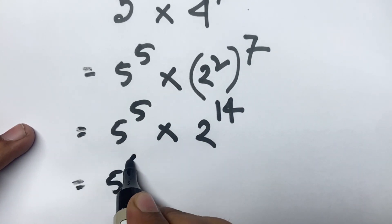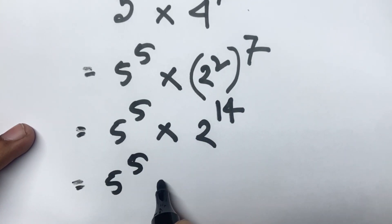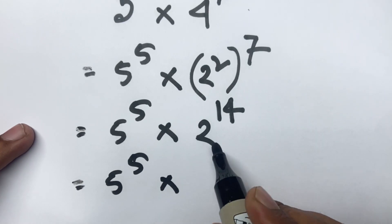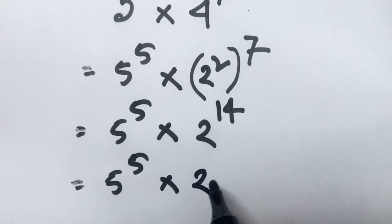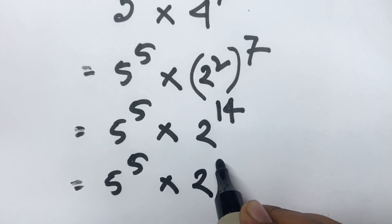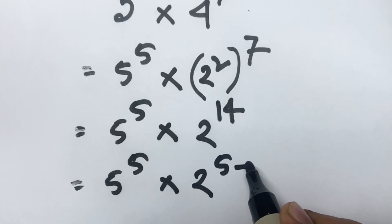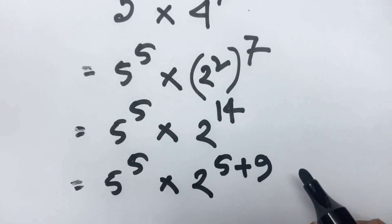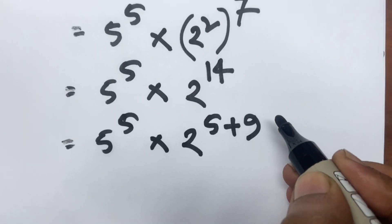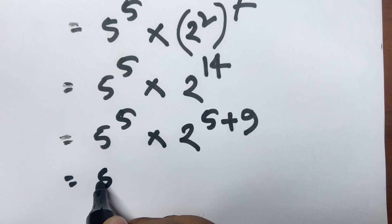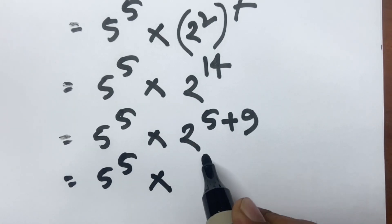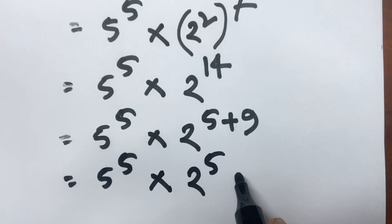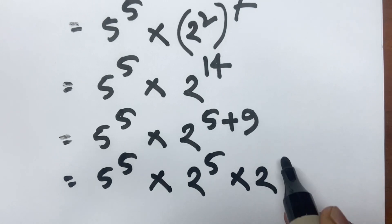So we have 5 to the power 5 times 2 to the power 14. I can rewrite 14 as 5 plus 9, giving us 5 to the power 5 times 2 to the power 5 times 2 to the power 9.